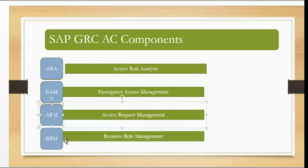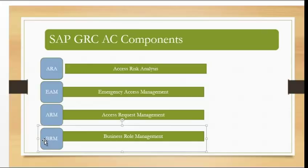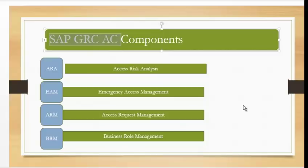The fourth module is BRM — Business Role Management, which helps create business roles in the system itself. Access Risk Analysis is the most important and most effective sub-module of SAP GRC Access Control.